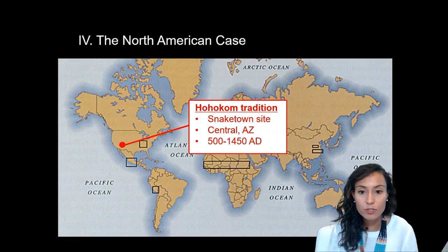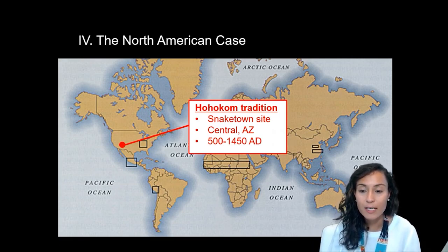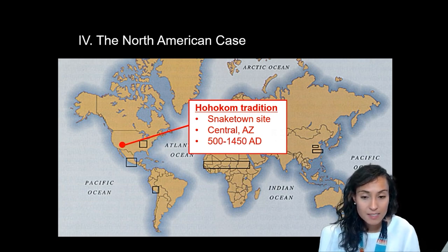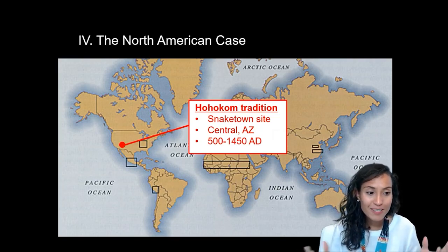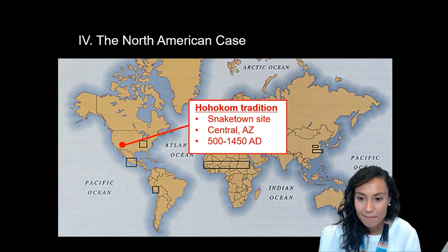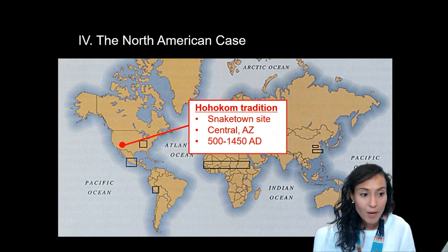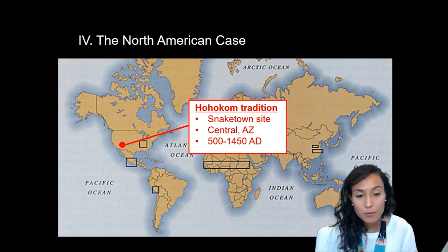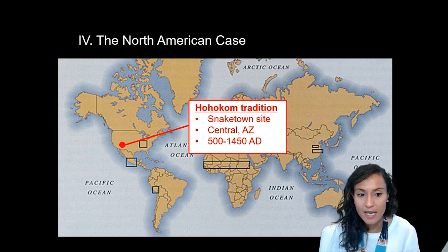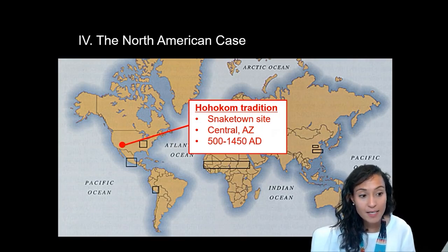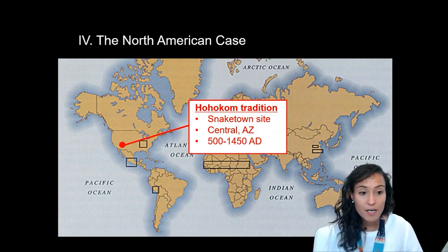The Hohokam culture arose in central Arizona during the adoption of agriculture in the American Southwest. The contemporary descendants of the Hohokam are the Tohono O'odham people who live here in Arizona today. The ancestral Tohono O'odham people occupied the Sonoran Desert near modern-day Phoenix between roughly 500 and 1450 AD. Perhaps the most extensive Hohokam site ever excavated by archaeologists is called Snaketown, which is located in southern Arizona.